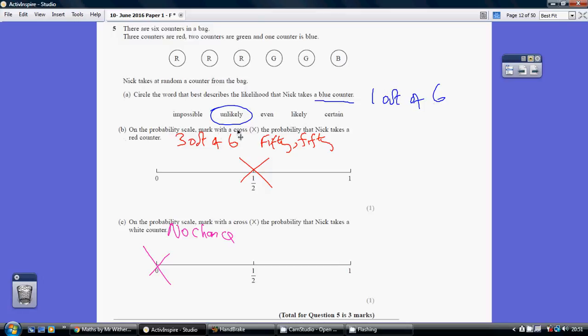On this probability scale, mark with a cross the probability that Nick takes a red counter. Well, 3 out of 6 are red. That's a 50-50 chance, so a half chance. We need to do an X mark spot on a half.